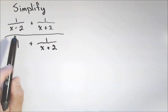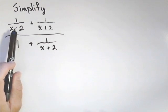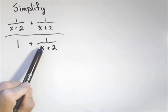So our goal is to simplify the following rational expression. Notice we have a fraction on top and we do have a fraction in the bottom.